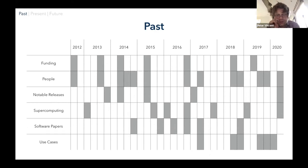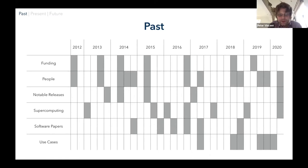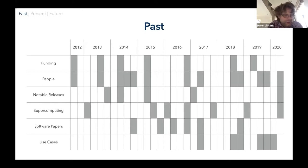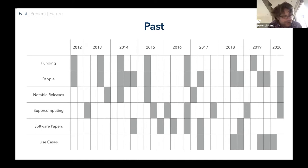Right at the beginning of 2012, I started my faculty position at Imperial College. Over the next ten or fifteen minutes of the talk, I want to take you through the point from when I started at Imperial to where we are now in developing PyFR, contextualised by those thoughts, with a focus on the brilliant team of people who've helped deliver this, the funding sources, notable releases, supercomputing milestones, journal papers, and the move towards real-world industrial use cases.